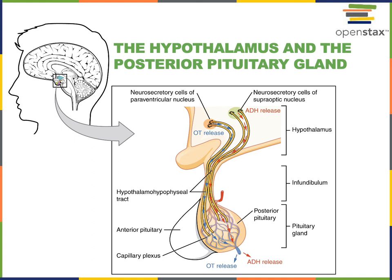Here we see an illustration showing the structure of the pituitary gland. There are two distinct lobes — this section focuses on the posterior pituitary gland, also known as the neurohypophysis. The posterior pituitary gland is connected to the hypothalamus, and neurons found in the hypothalamus secrete hormones from the posterior pituitary.